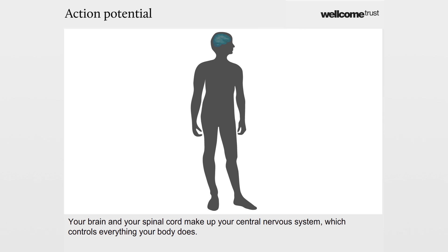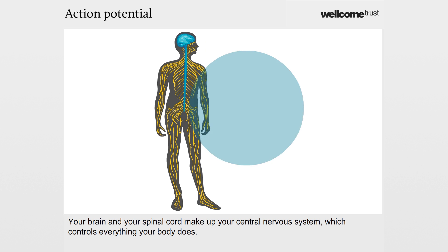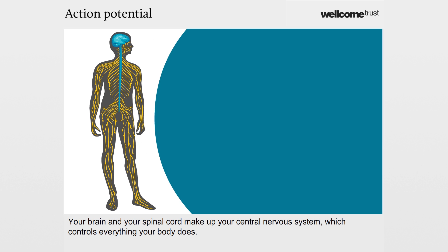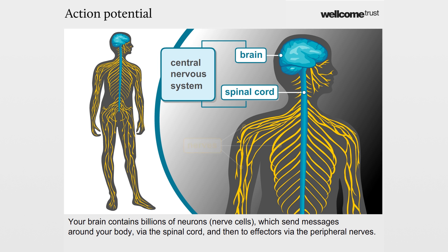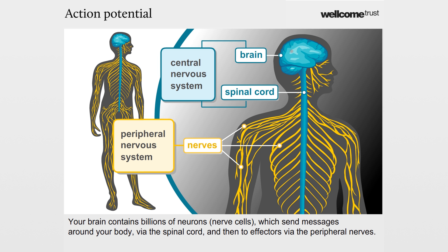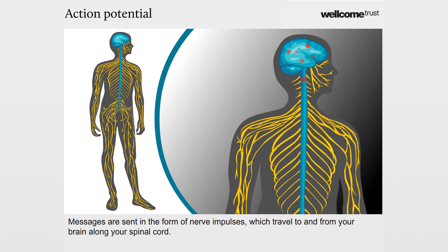Your brain and your spinal cord make up your central nervous system, which controls everything your body does. Your brain contains billions of neurons, nerve cells, which send messages around your body via the spinal cord and then to effectors via the peripheral nerves. Messages are sent in the form of nerve impulses, which travel to and from your brain along your spinal cord.